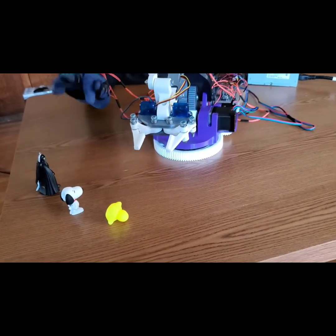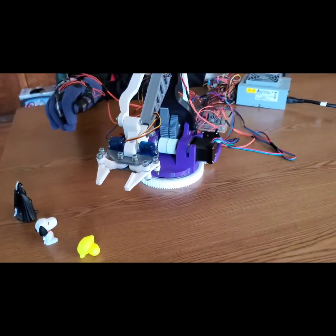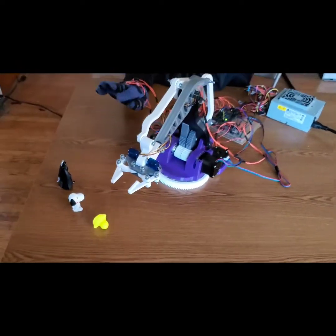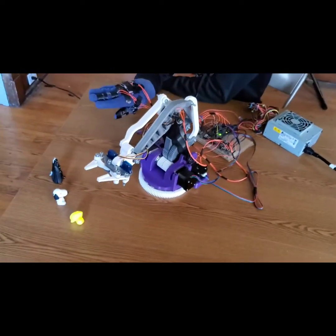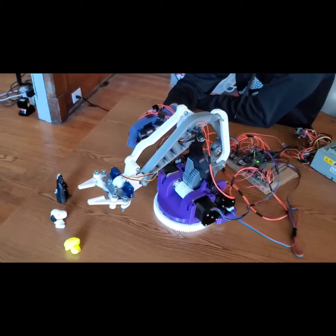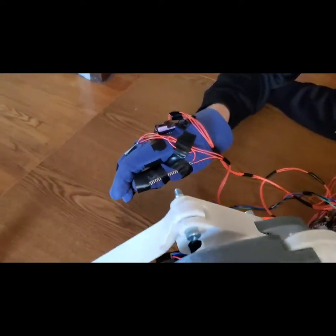So there you have it. A 3D printed robot arm. Completely controlled by a glove with two flex sensors and an accelerometer. Thanks.